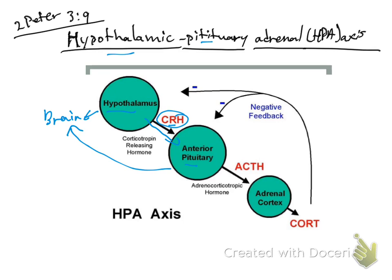Once the anterior pituitary gland receives the signal from CRH, it secretes another hormone called the adrenocorticotropic hormone, abbreviated ACTH. If you notice the word 'adrenal' in ACTH, that tells you where it goes — to the adrenal gland. The adrenal gland has a cortex and a medulla.